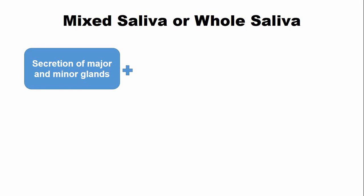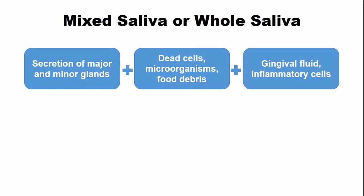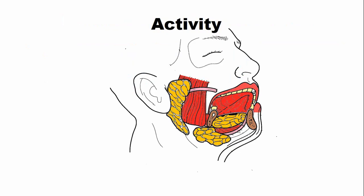Mixed saliva comprises secretions from both the major and the minor glands. Saliva also contains dead cells, microorganisms, fluid debris, gingival fluid, and inflammatory cells, all present in the oral cavity. This mixture is referred to as mixed or whole saliva.